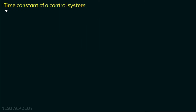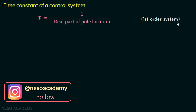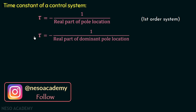In the previous lectures, we discussed the time constant of a control system. We know that the time constant tau is equal to negative 1 over the real part of the pole location. But this expression is only valid for a first order system, where the number of poles is equal to 1. If the number of poles in the transfer function is greater than 1, then tau is equal to negative 1 over the real part of the dominant pole location, and this expression is defined for higher order systems.